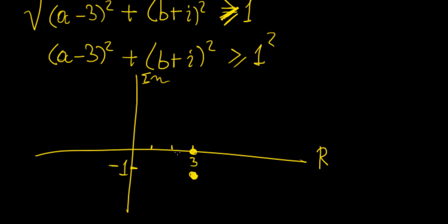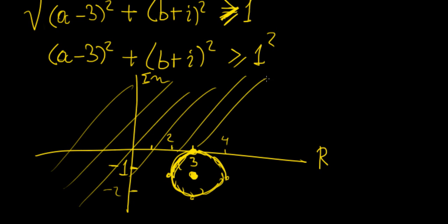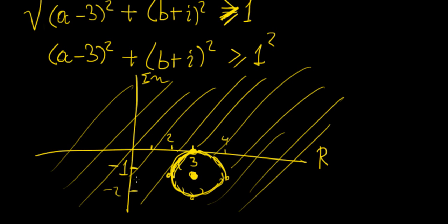The radius is 1. We mark 1, 2, 3 along the real axis and the center at 3 minus i. Since it's greater than or equal to 1, we draw a solid line for the circumference — including all numbers on that circumference — and the region covers everything outside that circular area. So our region is z minus 3 plus i greater than or equal to 1.